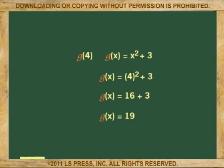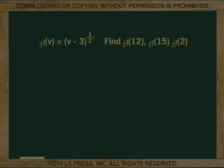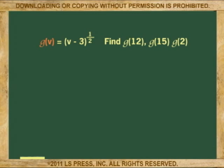Another example could look like this: The function of g of v equals v minus 3 to the 1 half. Find the function at 12, 15 and 2. Now, you have to remember that anything elevated to the 1 half is the exponential form of the square root, or the square root of v minus 3.